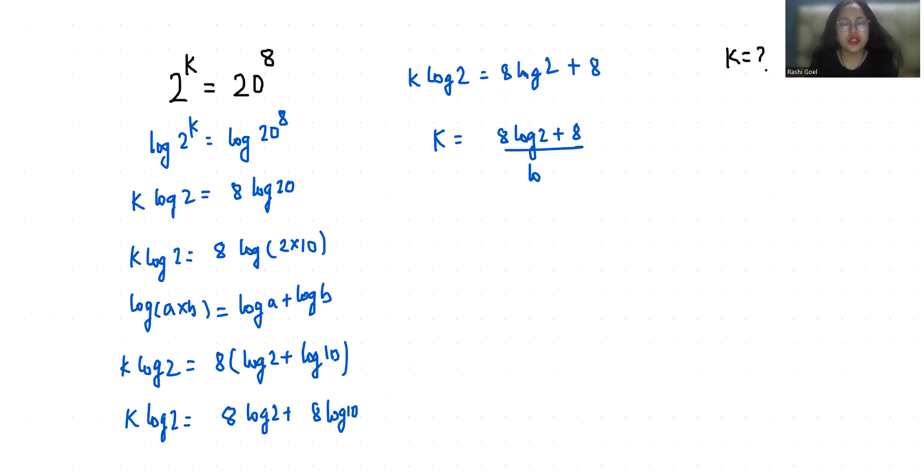k equals 8 plus 8 by log 2. k equals 8 plus 8 by log 2, where log 2 is 0.3010.